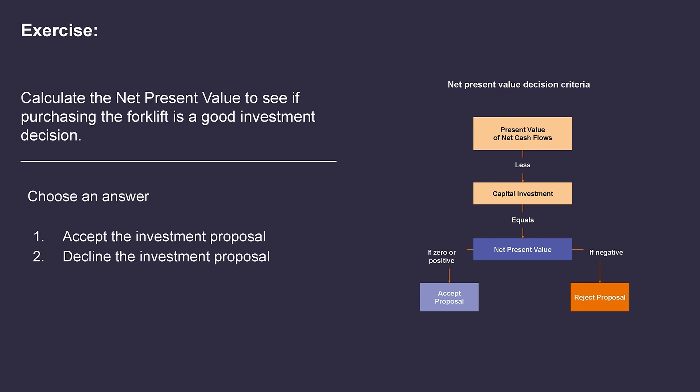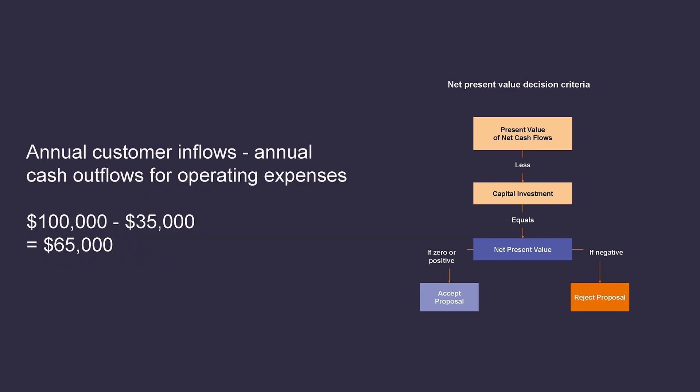The first step on the flowchart is to calculate the present value of the net cash flows. This would be the $100,000 we're receiving as annual inflows from customers each year, and we would subtract out the annual cash outflows for operating expenses of $35,000 per year, which gives us our net annual cash flow of $65,000 per year.